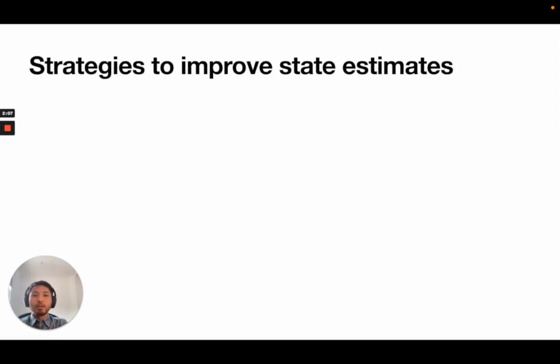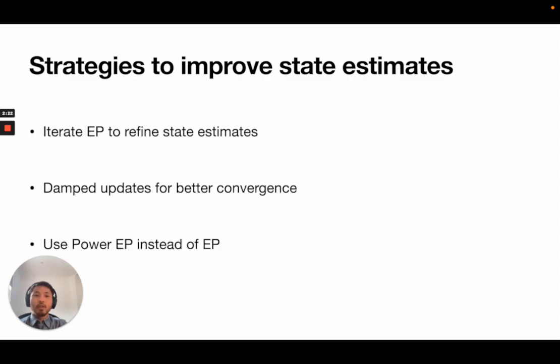We can then use this to build insights to further improve state estimates by employing existing techniques in the EP literature, such as refining state estimates by iterating further, using damping for better convergence, or using power EP instead of EP, which allows us to bridge with other approximate inference schemes such as variational Bayes.